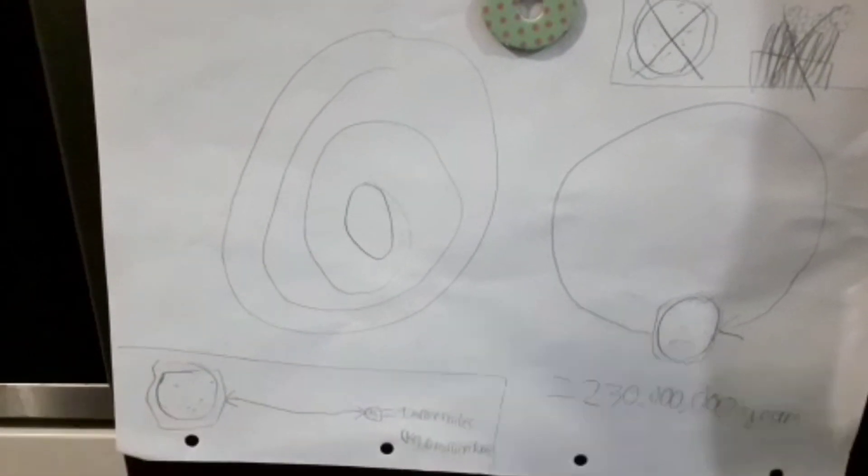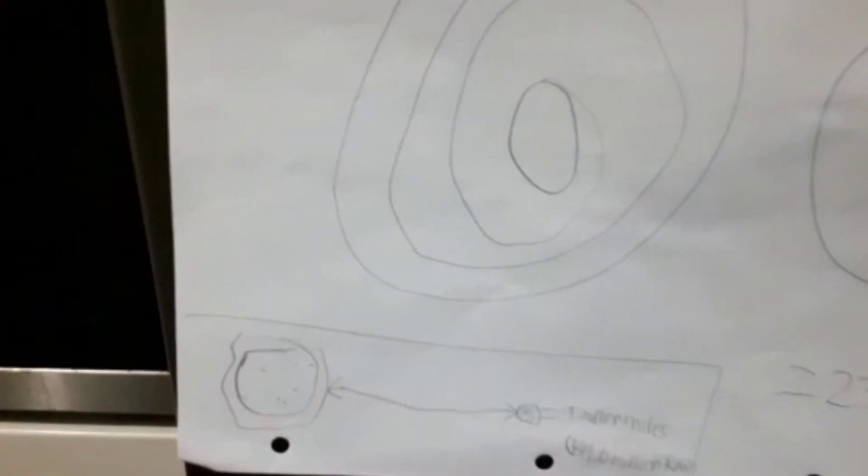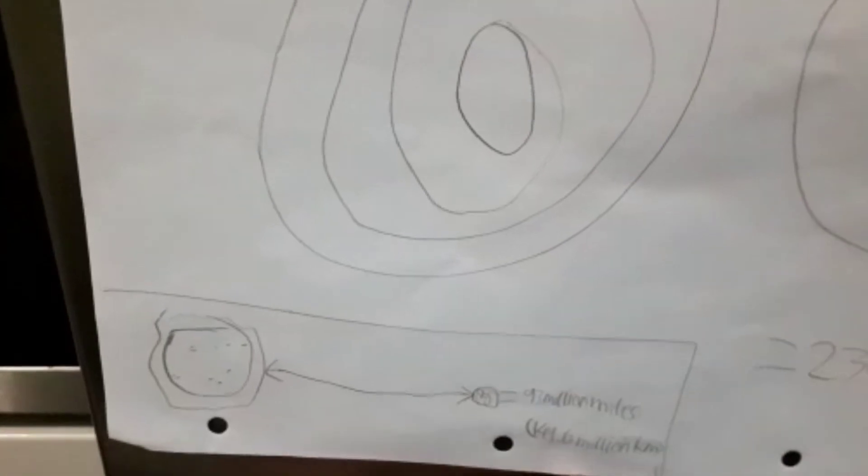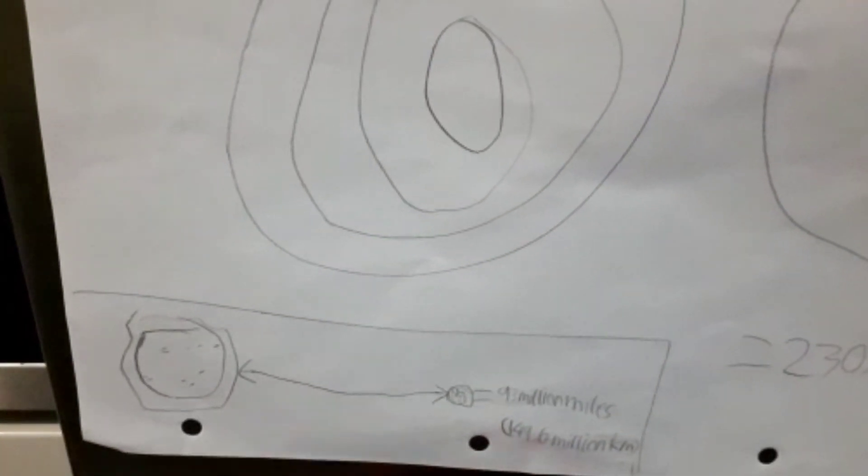Did you know that the Sun is 93 million miles away from the Earth, or 149.6 million kilometers?